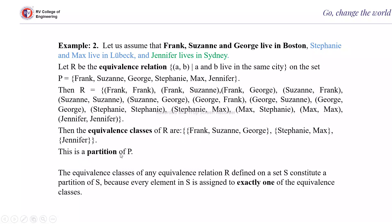So the equivalence classes form a partition of P. Each subset is reflexive, symmetric, and transitive. The equivalence classes of any equivalence relation defined on set S constitute a partition of S, because every element in S is assigned to exactly one of the equivalence classes. You can see that every element of P belongs to only one equivalence class.